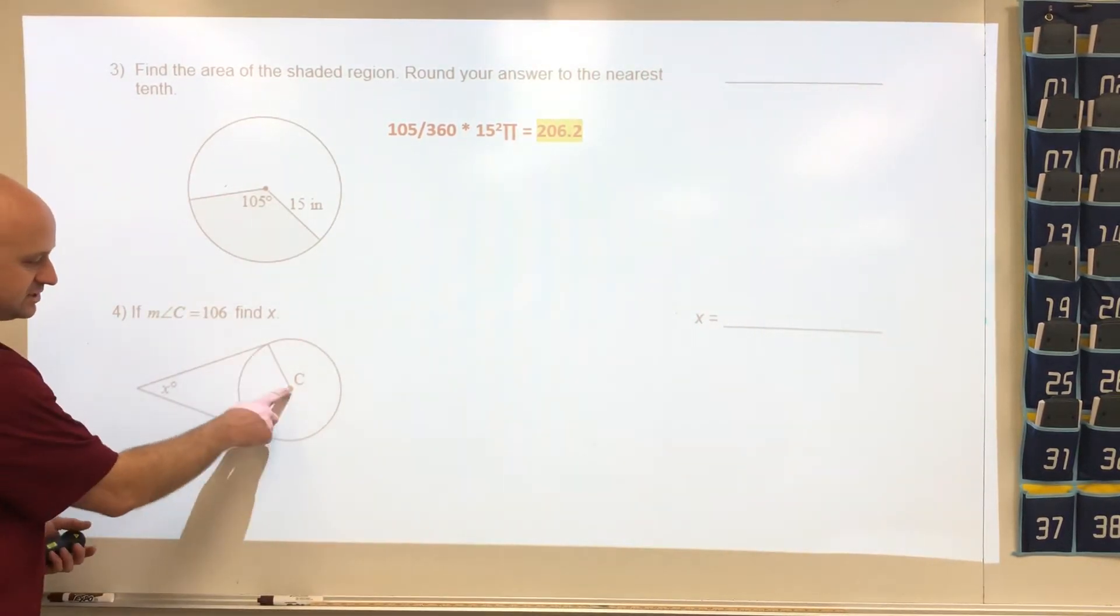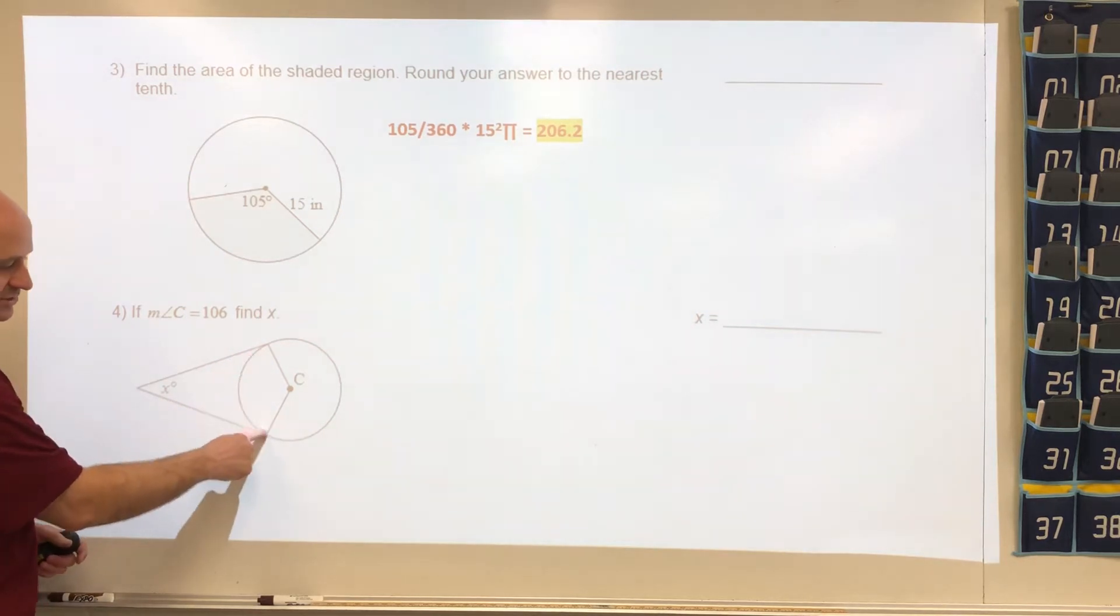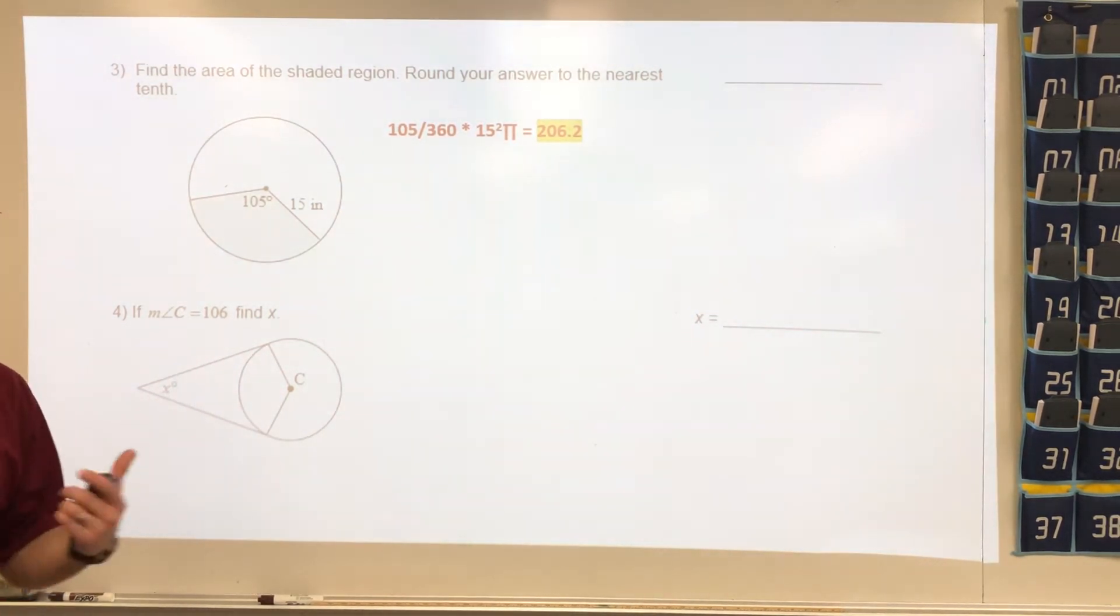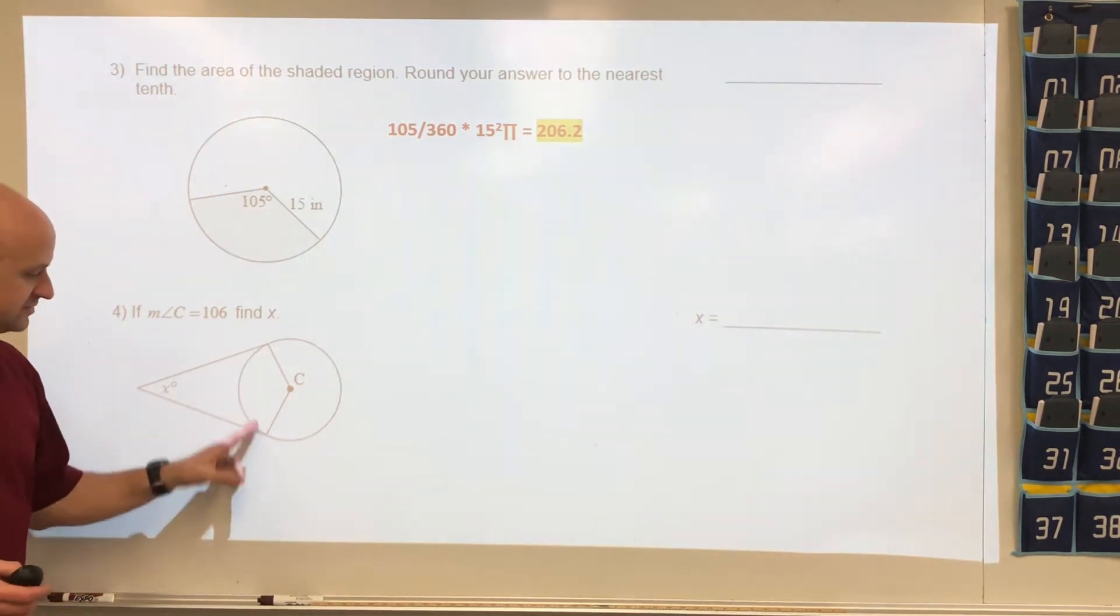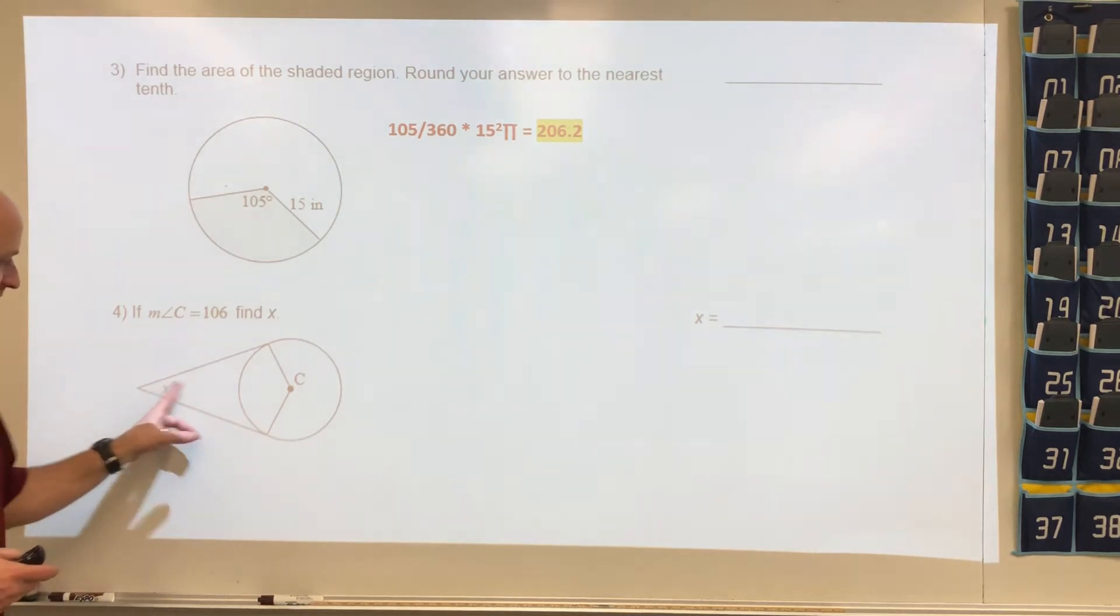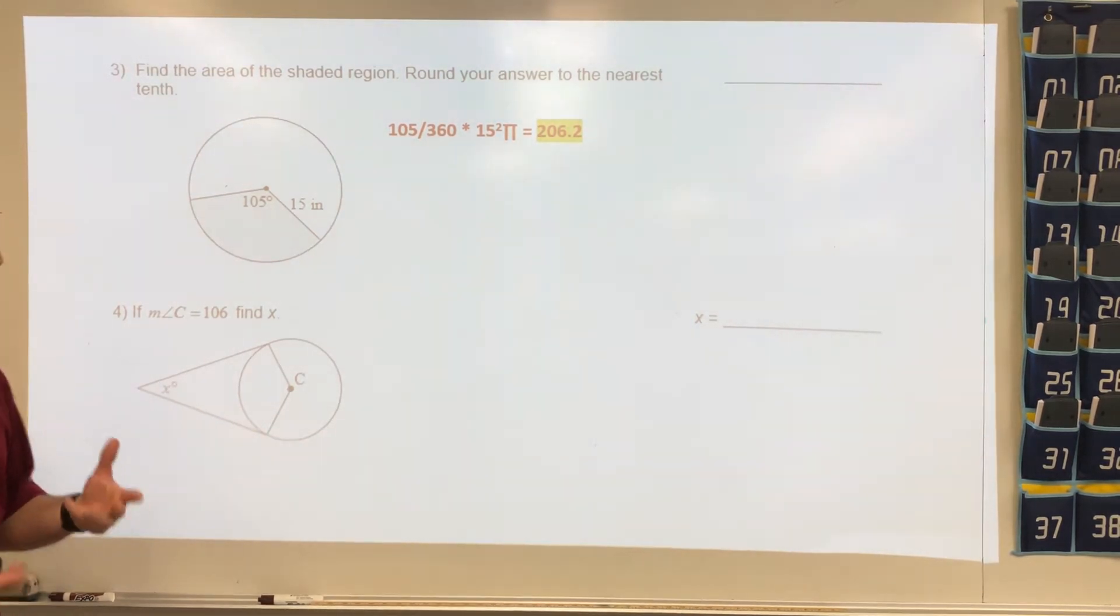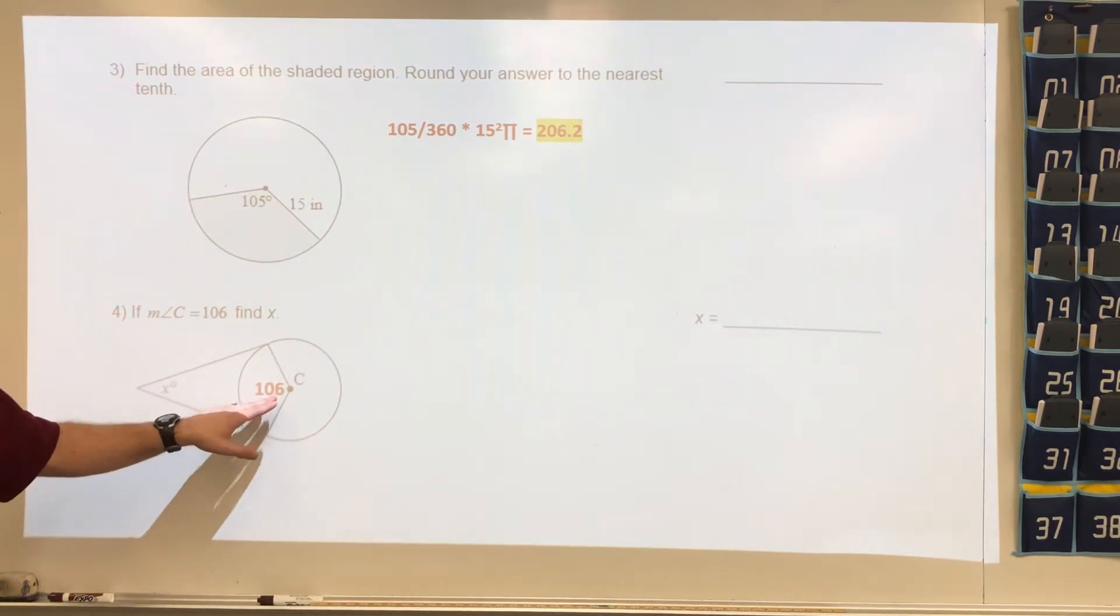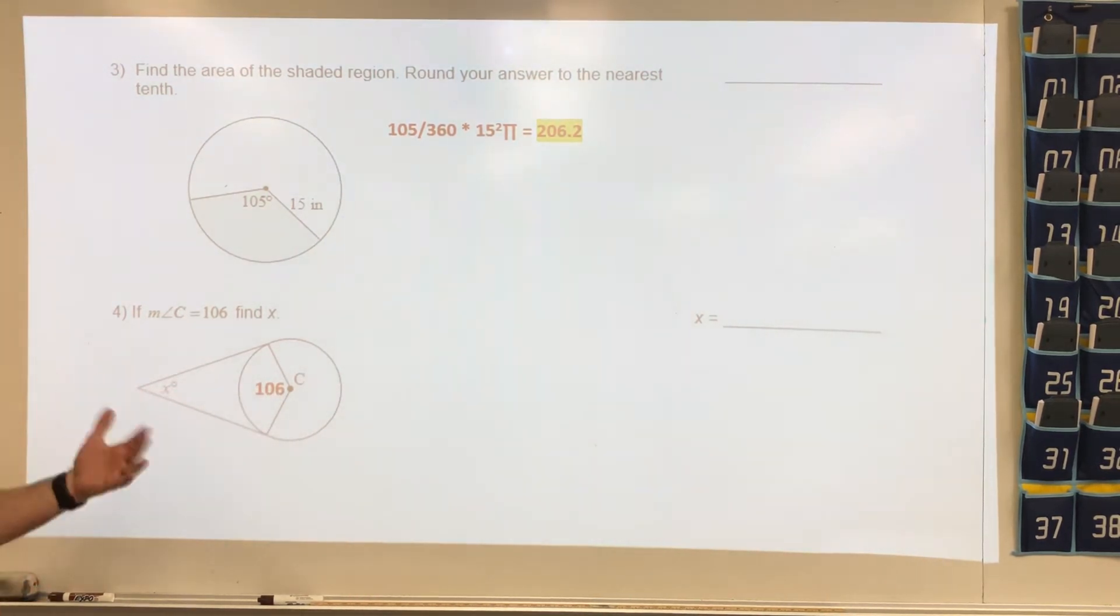Number four, we have two tangent lines. Because we have a radius to a tangent, these two angles are 90 degrees. We have a kite, which is a quadrilateral, and a quadrilateral is 360 degrees. If both of these are 90, we have 180 degrees left. That means this plus this has to add up to 180. They tell us that angle C is 106, so 106 plus x has to add up to 180. If we do the math, we get 74 degrees as our answer.